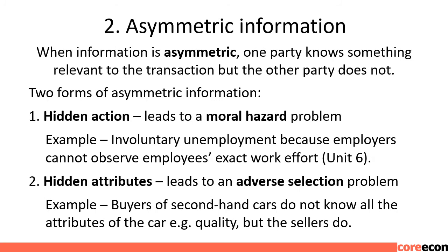Market Failure — Other Types. (2) Asymmetric Information: when information is asymmetric, one party knows something relevant to the transaction but the other party does not. Two forms: (1) hidden action — leads to a moral hazard problem, e.g., involuntary unemployment because employers cannot observe employees' exact work effort; (2) hidden attributes — leads to an adverse selection problem, e.g., buyers of second-hand cars do not know all the attributes of the car, but the sellers do.